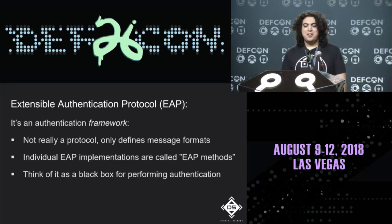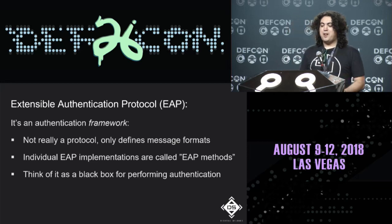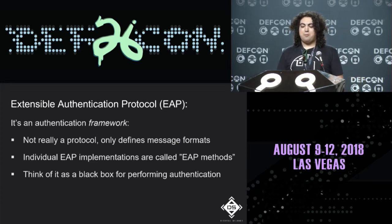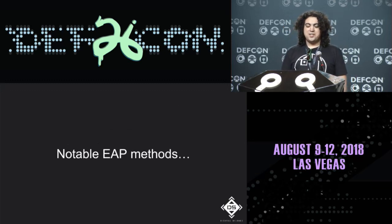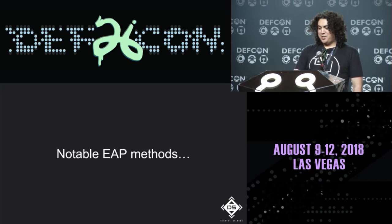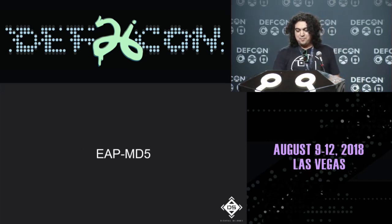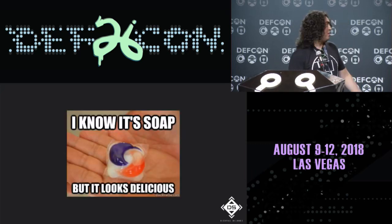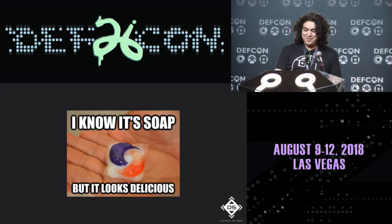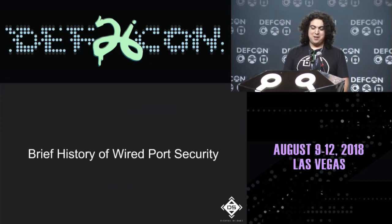EAP is short for Extensible Authentication Protocol — more of an authentication framework than a protocol, since it only defines message formats. The actual implementation is in an EAP method. Notable EAP methods include EAP-MD5, which has serious security issues; EAP-PEAP, which also has problems; and EAP-TLS, which has traditionally been considered stronger than the other two.